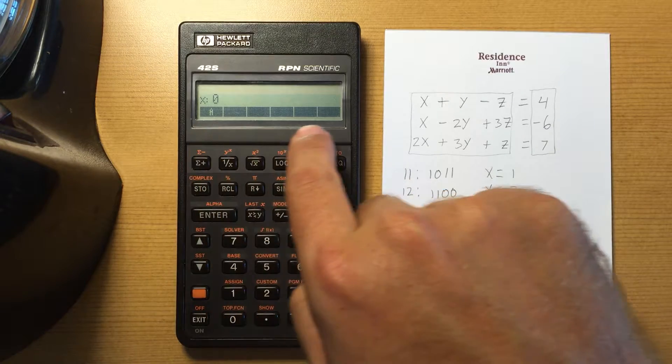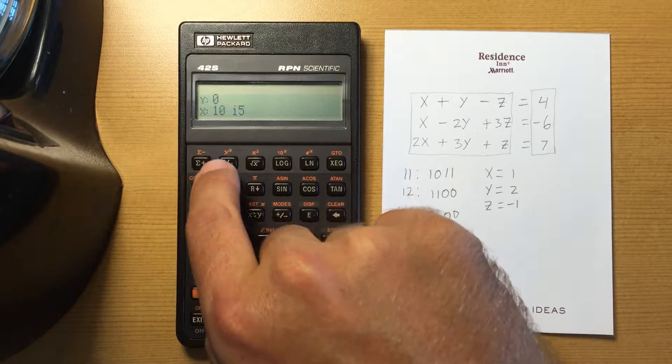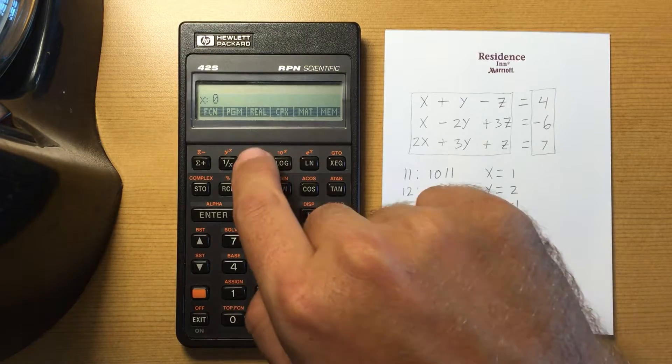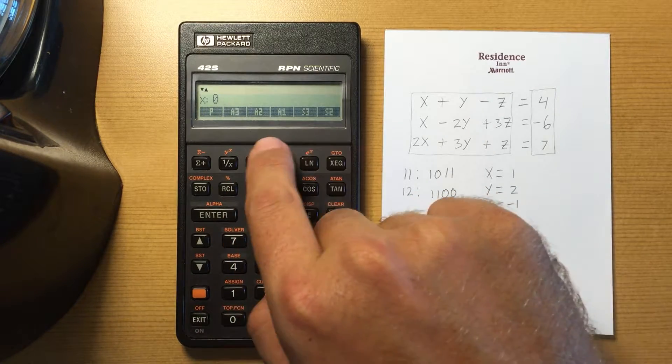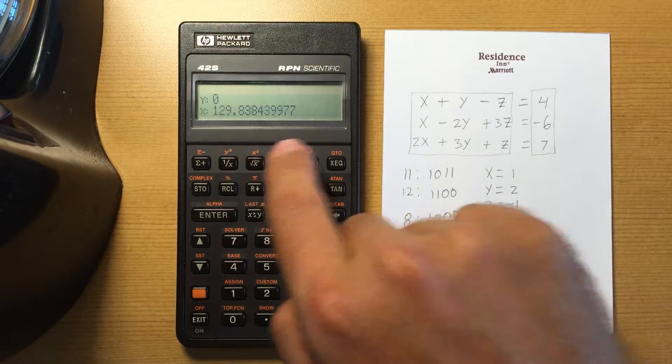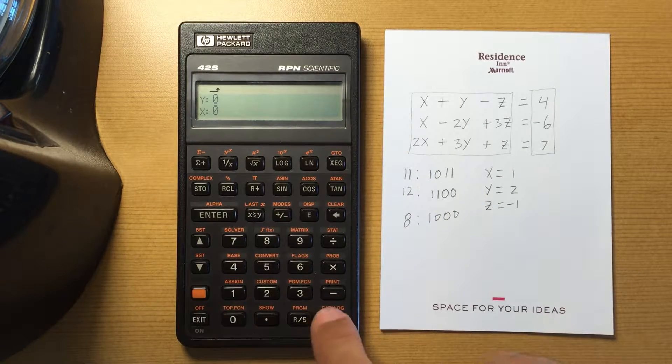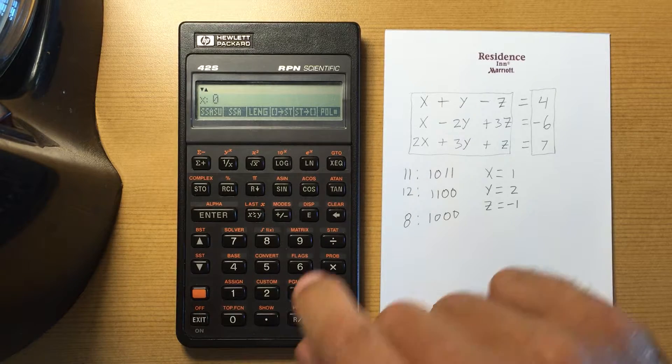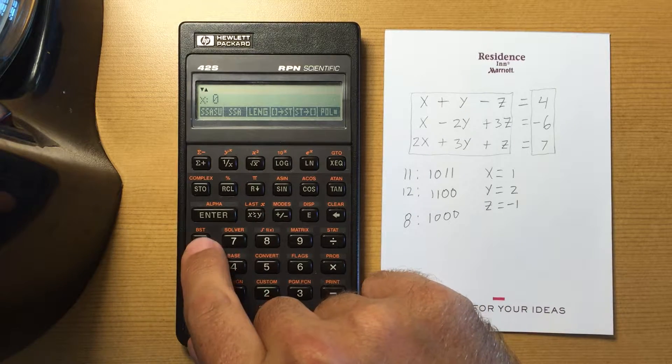Complex - that shows me what complex variables I have stored, so again I can load that into the register. Real - that shows me what real variables I have stored.